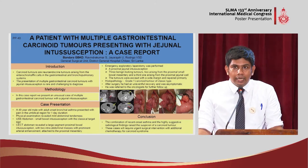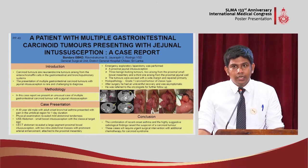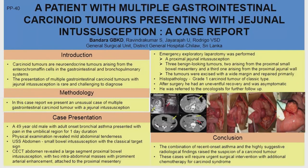We excised those tumors with wide excision margins and sent them for histology. Histology came back positive for a carcinoid tumor of grade one, classic type. The patient had an uneventful recovery after surgery with no complications. We referred the patient to oncology for further management. In the meantime, we received the serum chromogranin results, which were very high — in the order of thousands of micrograms per liter.